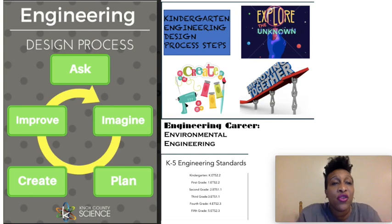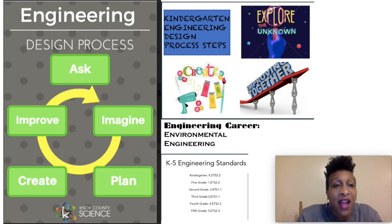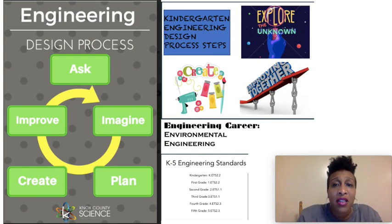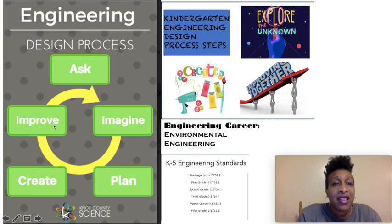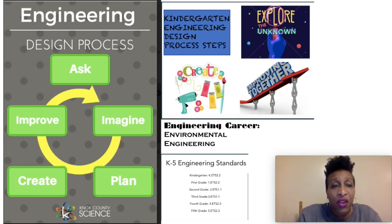One true fact is that all great engineers use the engineering design process, which is a five-step process in which you will ask, imagine, plan, create, and improve. We use this most of the time in grades one through five. If you are a kindergarten engineer, you follow a three-step process, which is to explore, to create, and to improve. As we go through this lesson today, you're going to see me refer back to this model with ask, imagine, plan, create, improve. The ideas in this process can change fluidly.